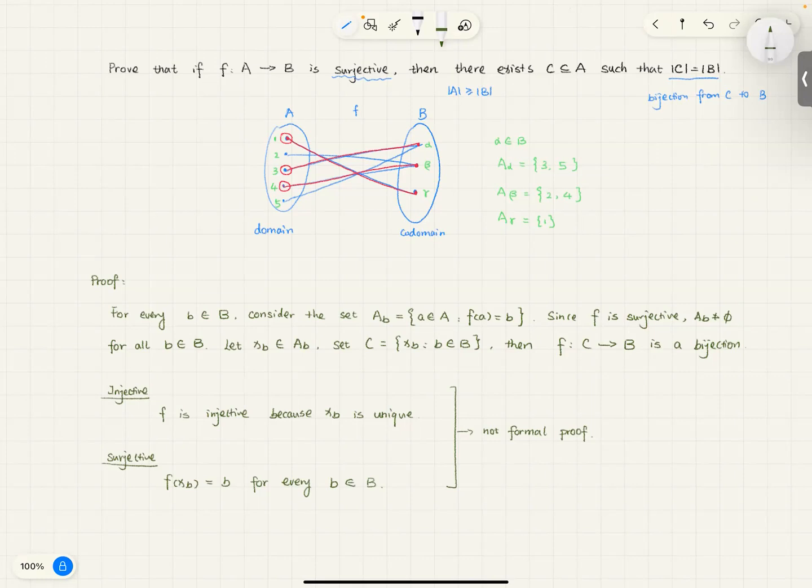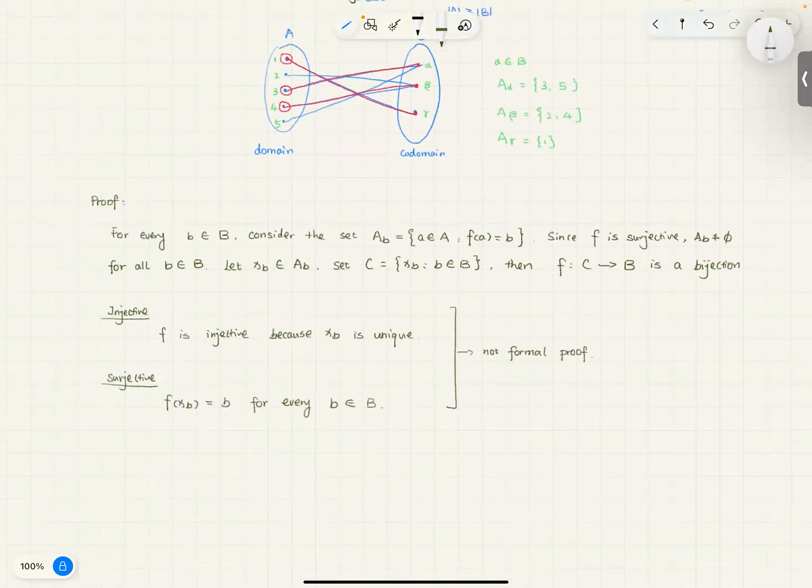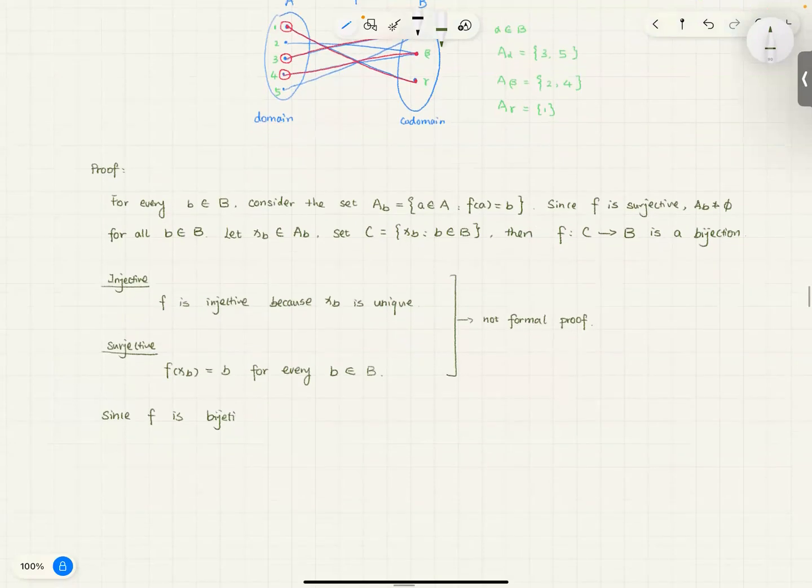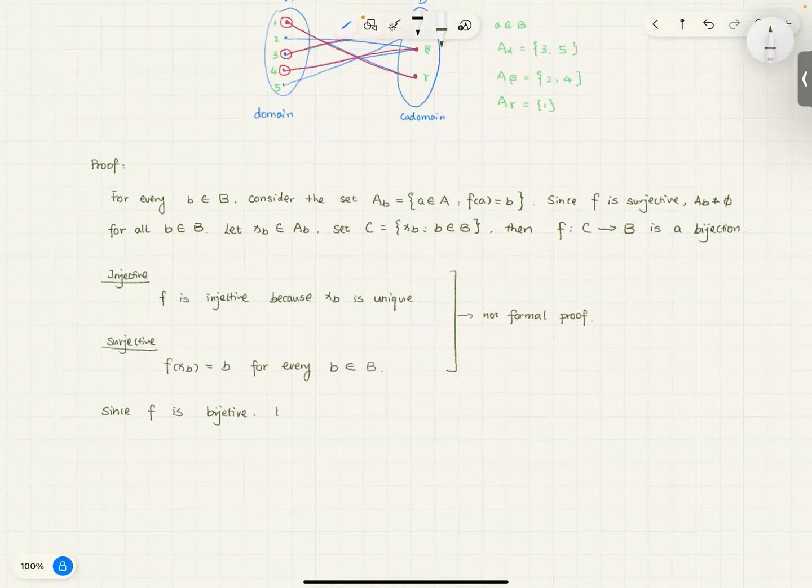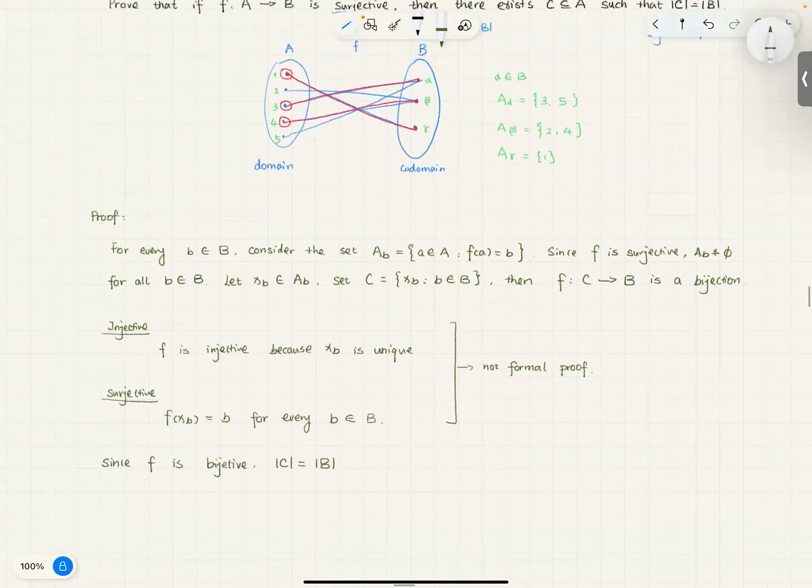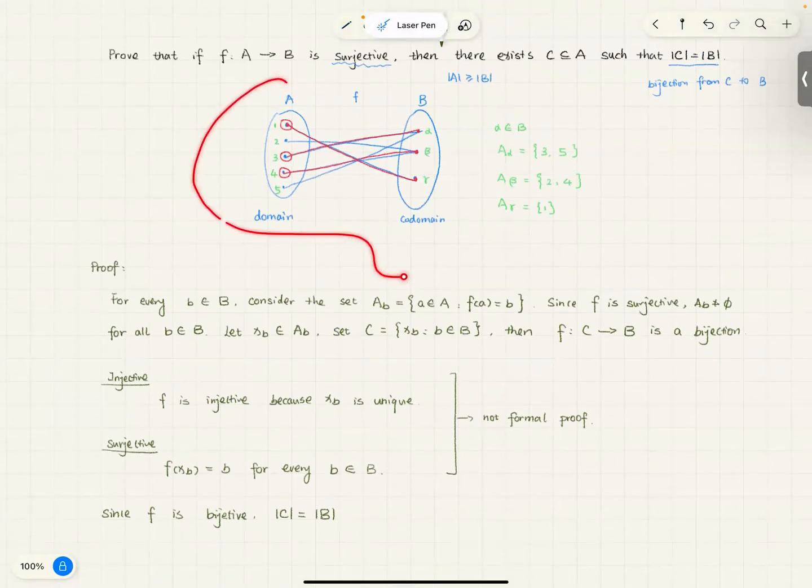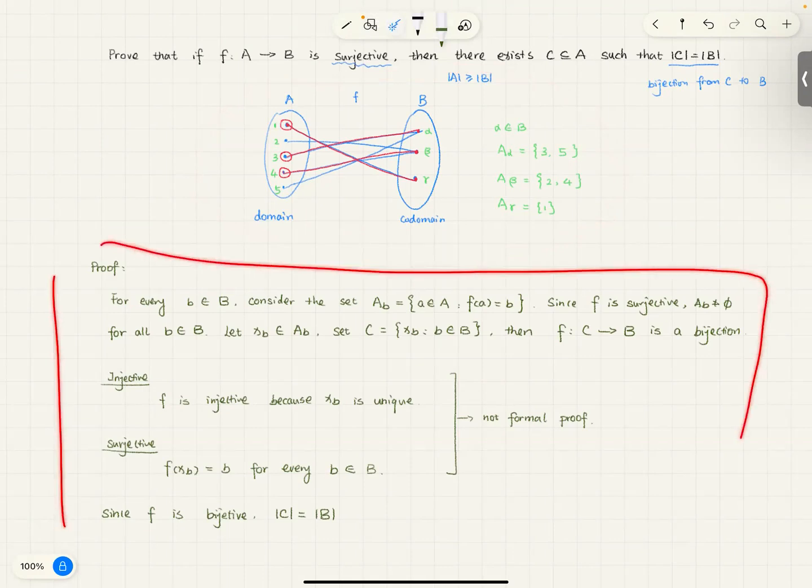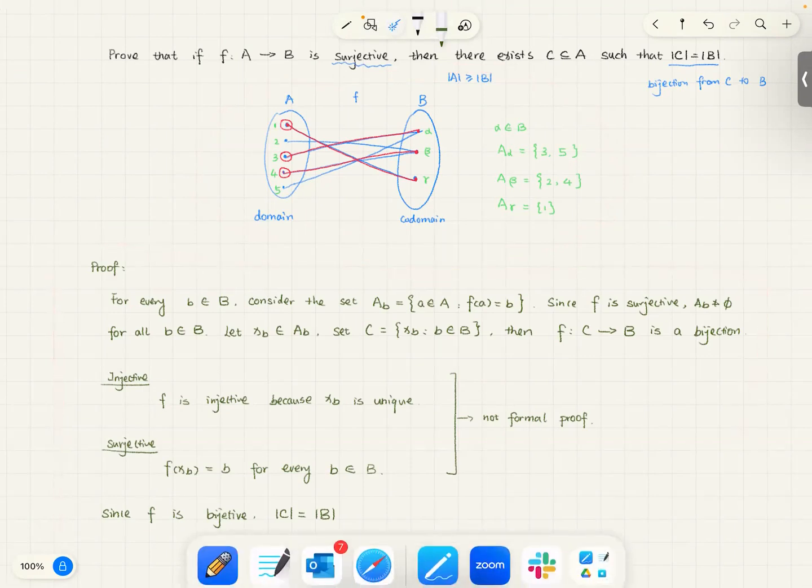And because I have a bijection, that means you have the same cardinality. So that is the whole question. Remember, this part is just as a demonstration. It's not part of the proof. This part is the proof. Only the green part. What we're going to do now is to give you an example of a chronology. Good.